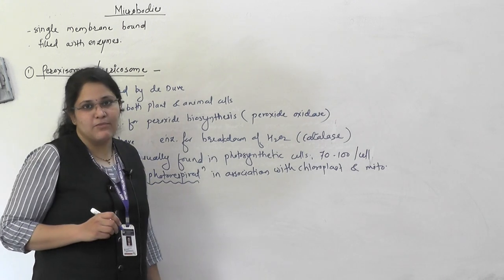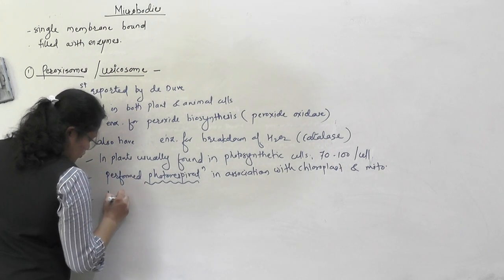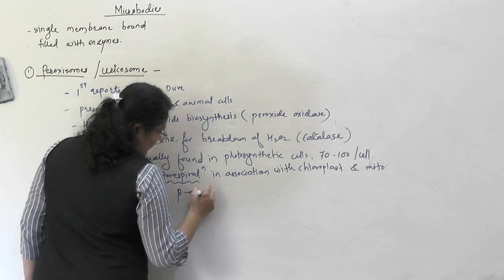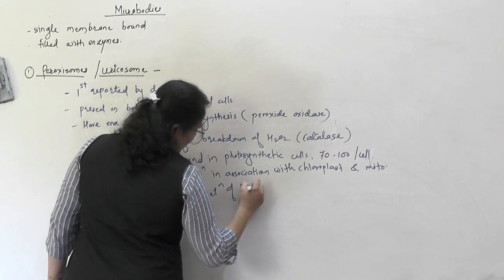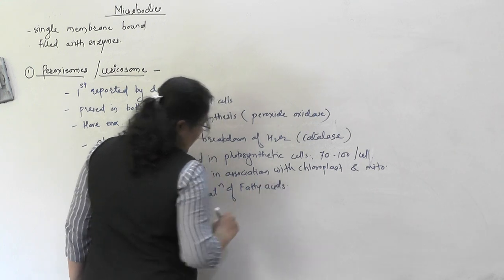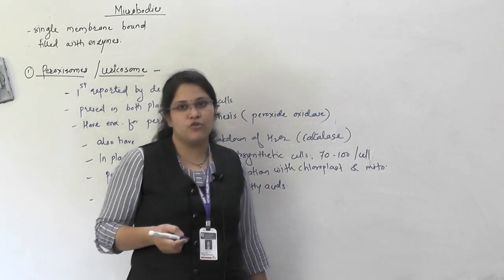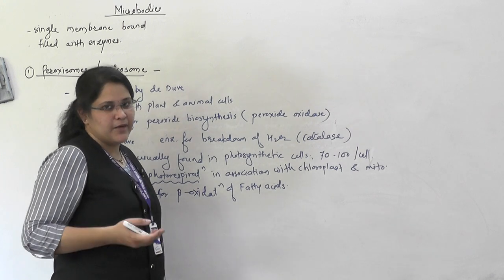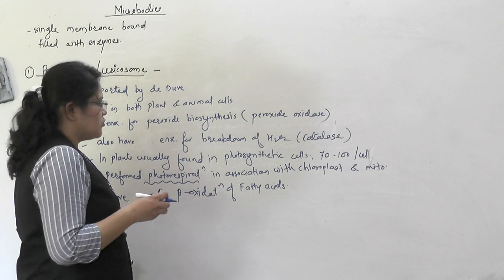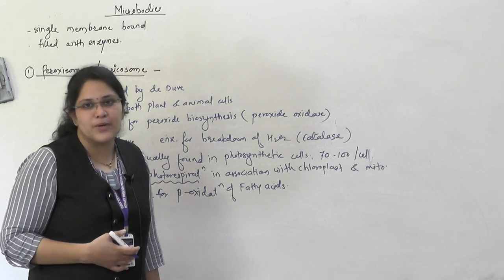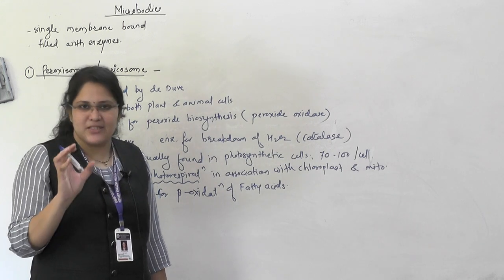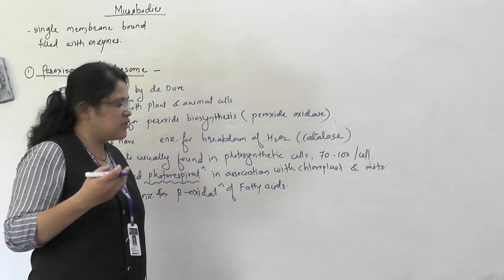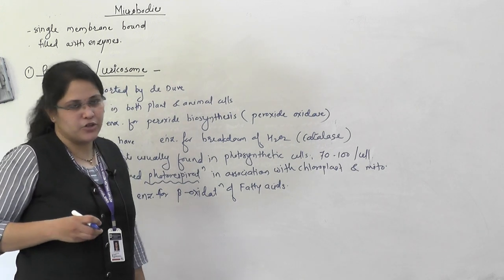They also have enzymes for beta oxidation of fatty acids. Beta oxidation is a metabolic pathway for breakdown of oils or fats — we will see this in detail in the respiration lesson. So the enzymes required for beta oxidation of fatty acids are also present in this peroxysome. These are simple sac-like structures having a single membrane filled with enzymes involved in different types of metabolic reactions.